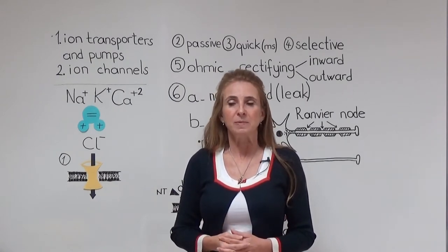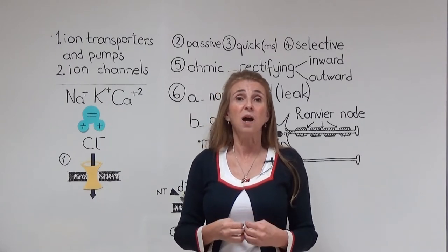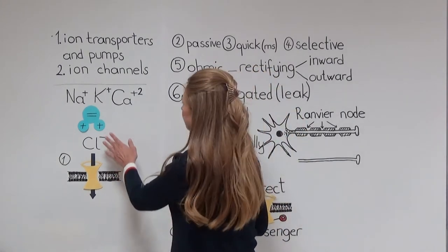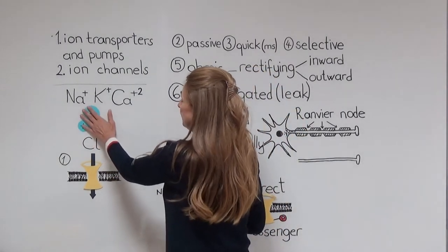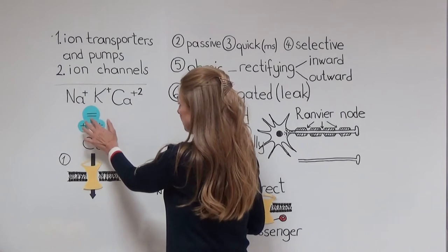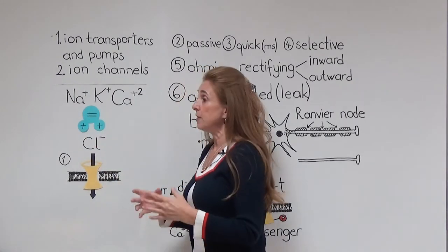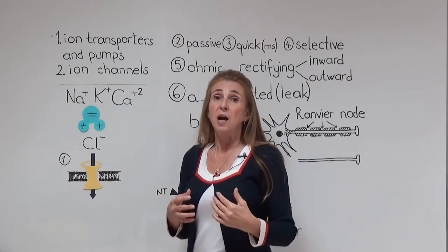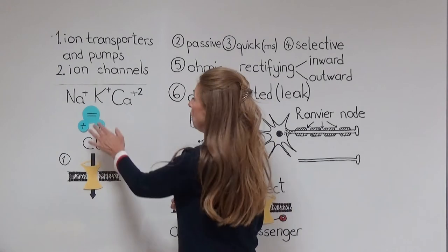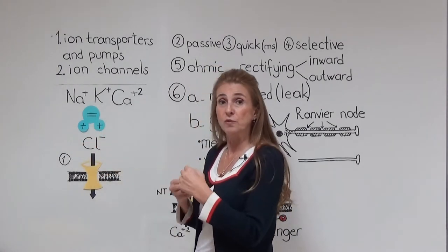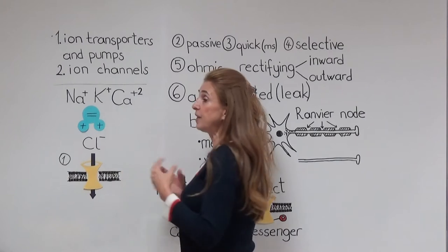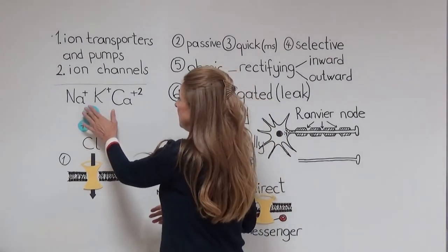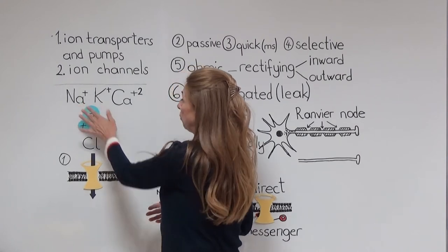But why do ions need ion channels? It's because the ions are covered by a water shell. Water molecules have equal numbers of negative and positive charges, so they are neutral. But the distribution of those charges is not homogeneous. Oxygen tends to pull electrons, so it has a negative charge. Hydrogen tends to lose electrons and has a positive charge. This makes the water molecule dipolar.